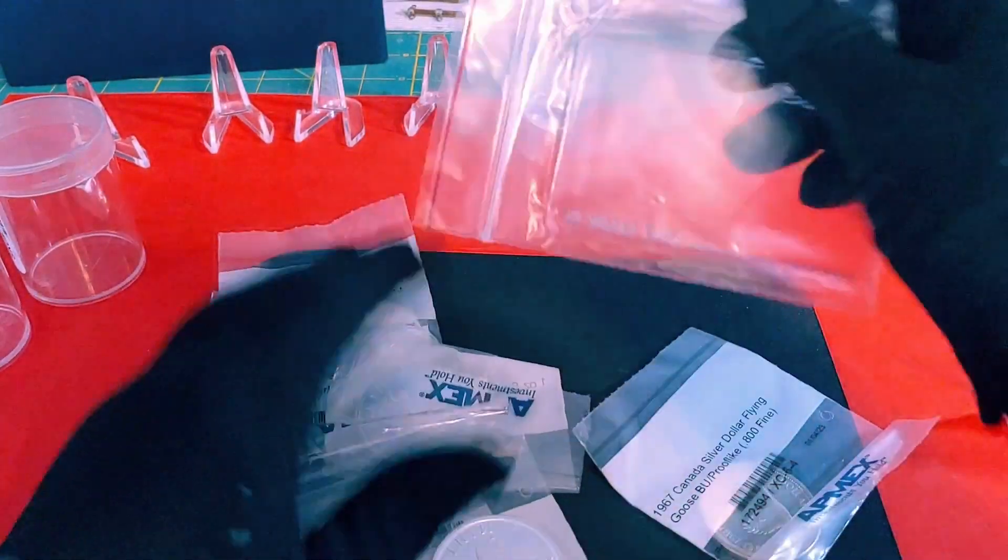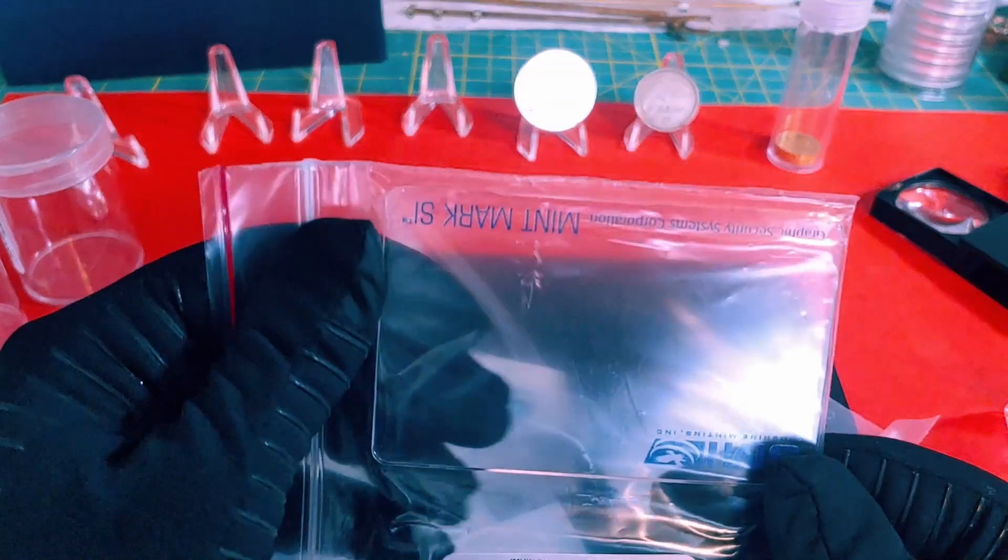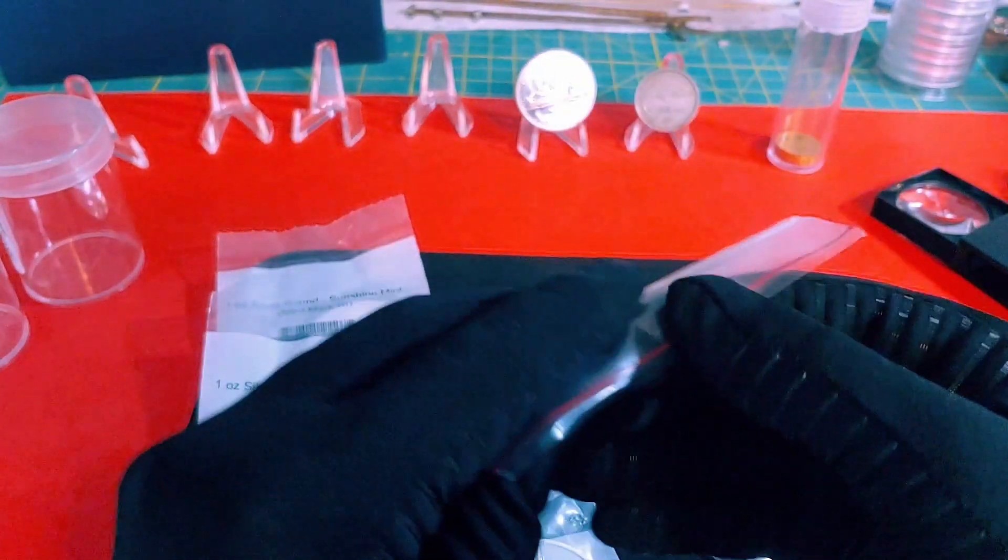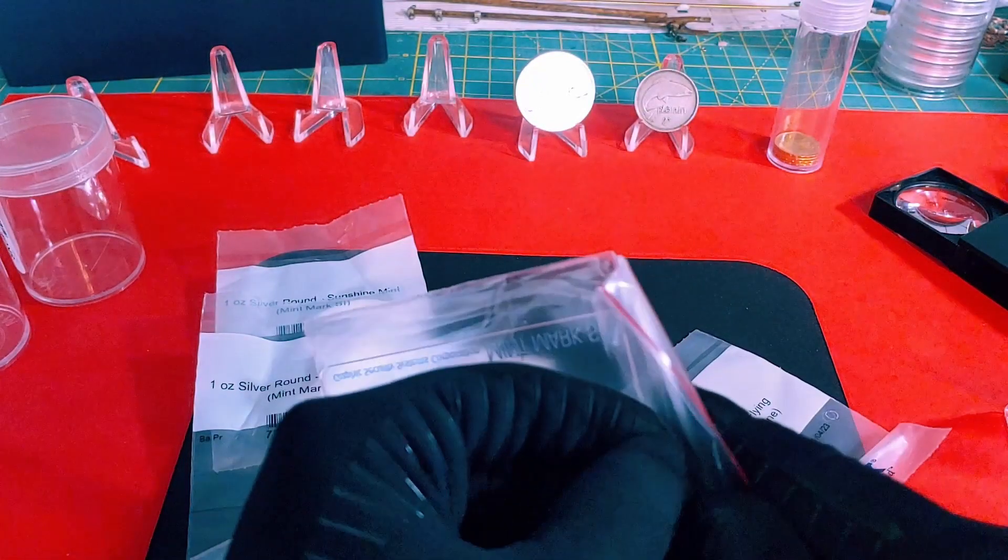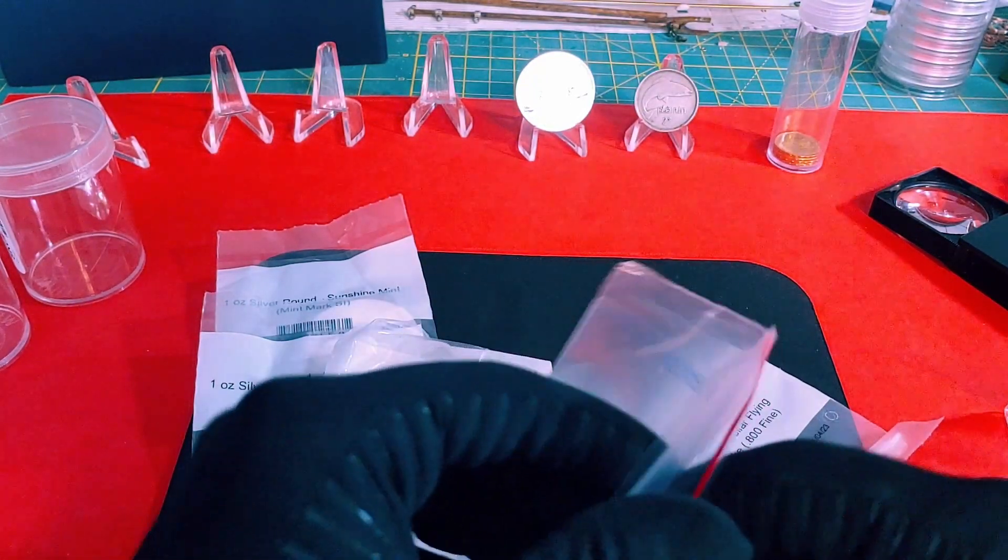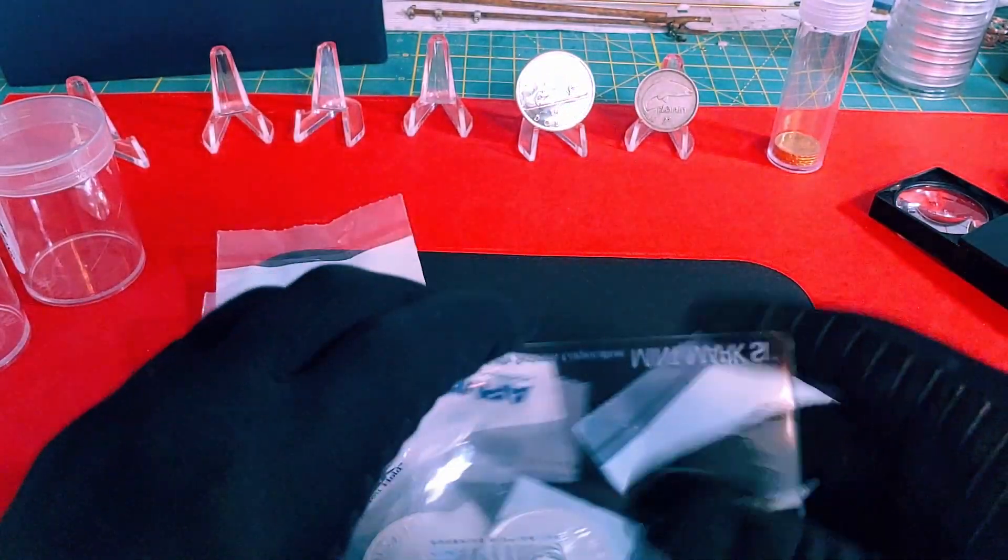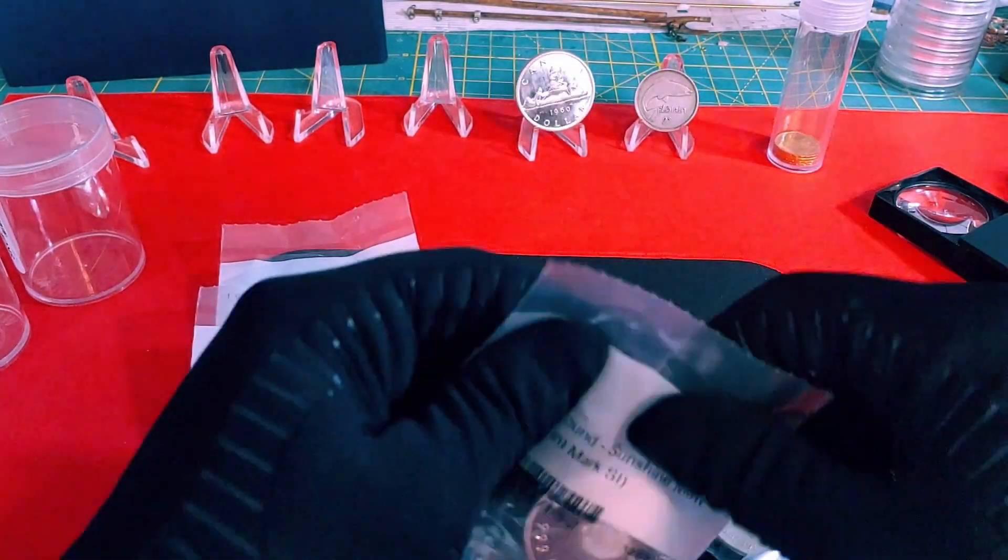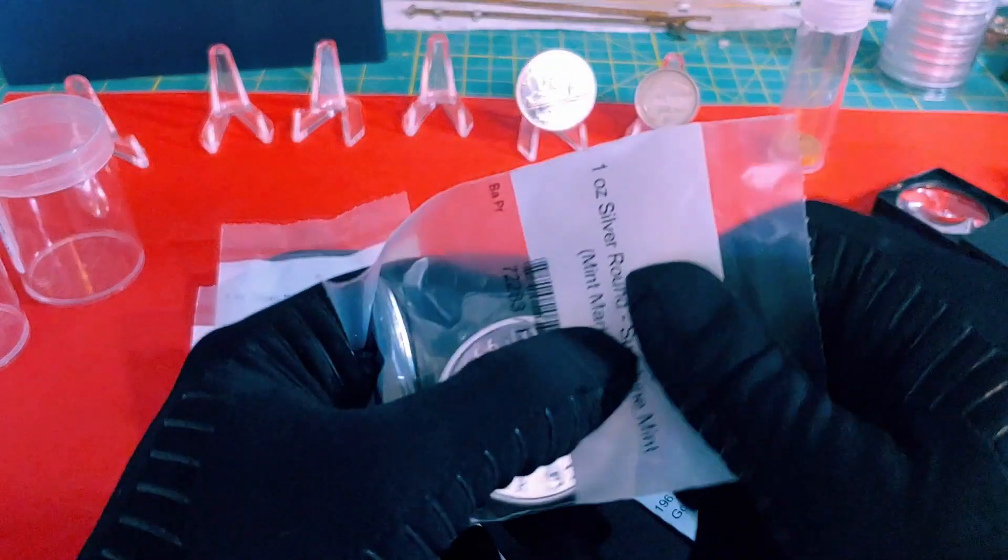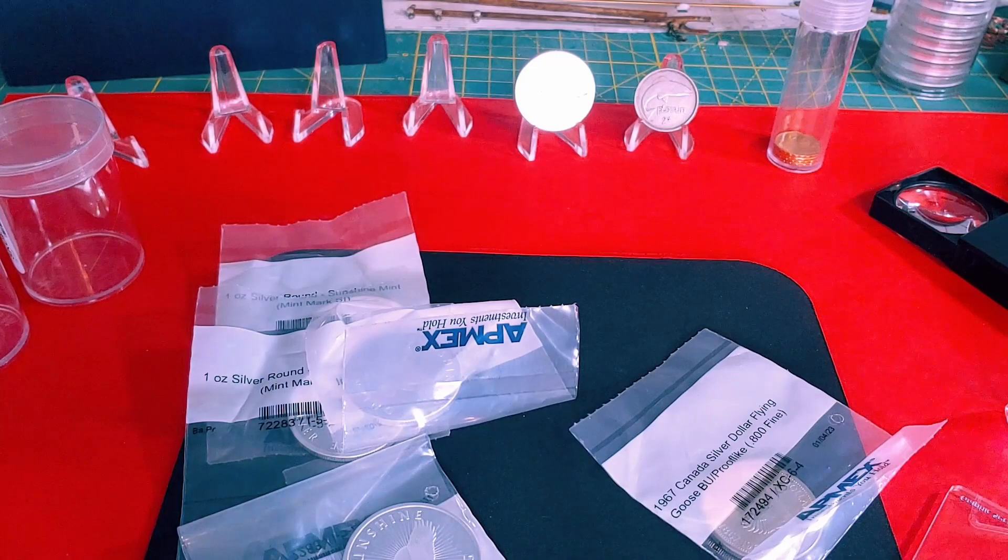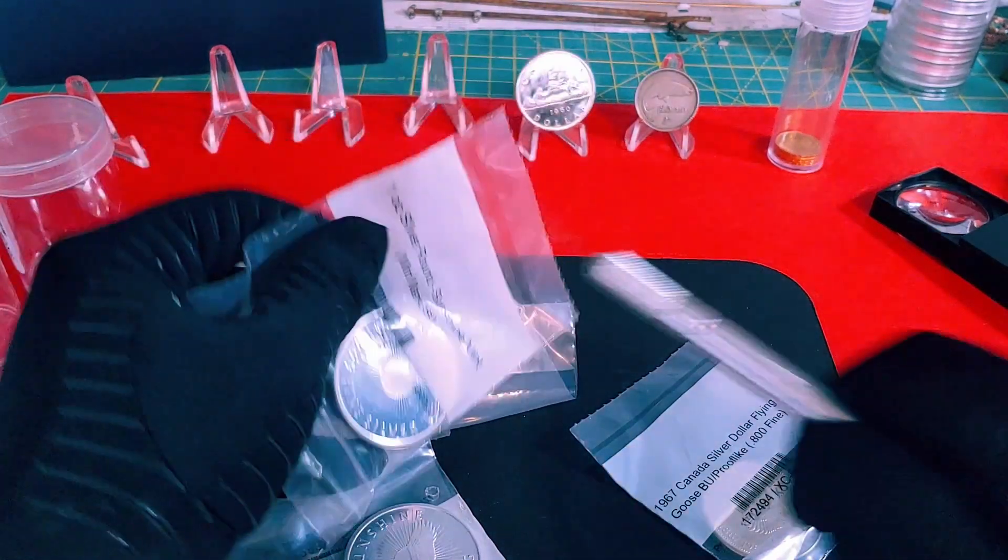So now I went and picked up the card for the sunshine mint, because they have that security feature. I did have a tube in the past, a tube of 20. I did sell it to my local coin shop about a while back. Let's see if I could, do I have a little knife here? Yes.